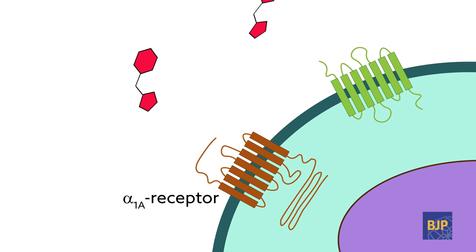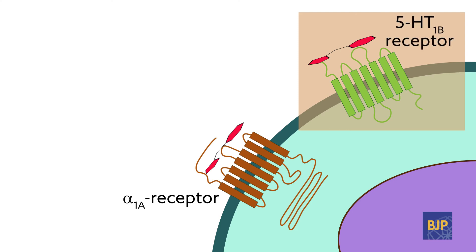Interestingly, oxymetazoline targeted an entirely different receptor in addition to alpha-1a receptors, the 5-HT1B receptor, which was responsible for the distinct profile.